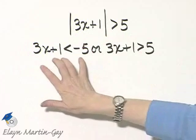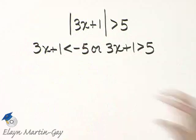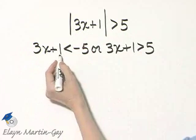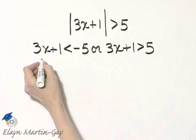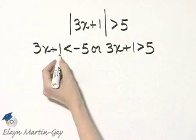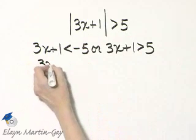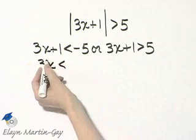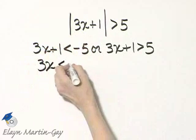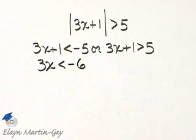Now you will then solve each of these inequalities. So let's solve them. Here I'll subtract 1 from both sides. If I subtract 1 from the left side, I'll have 3x. If I subtract 1 from the right side, I'll have negative 6.